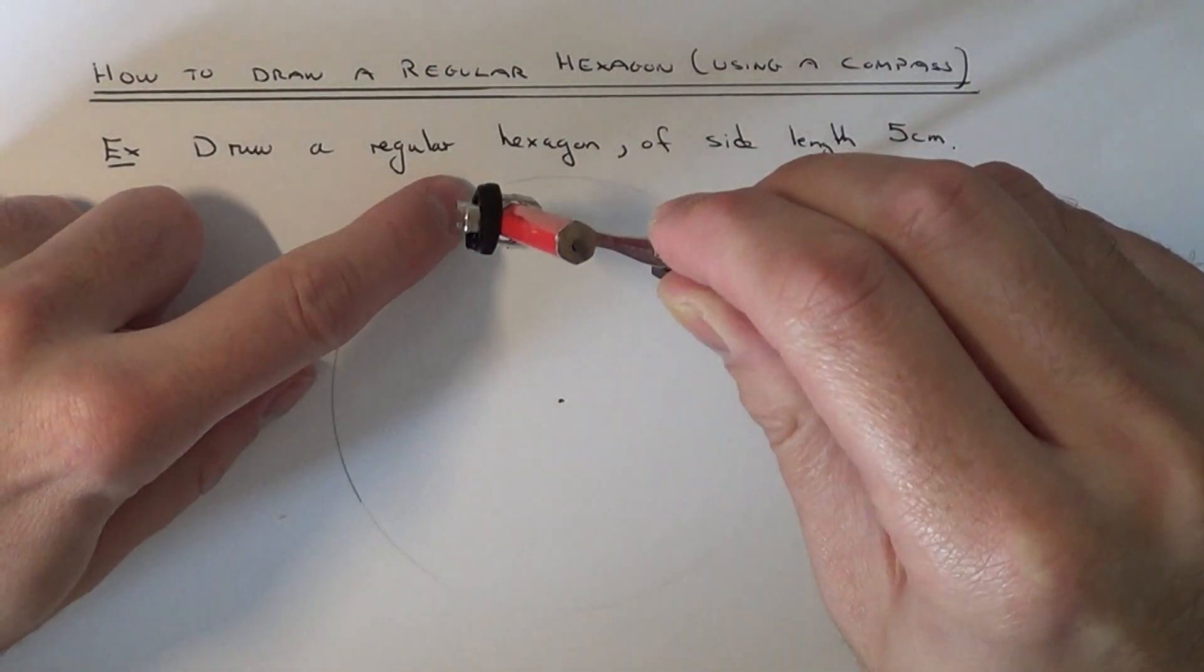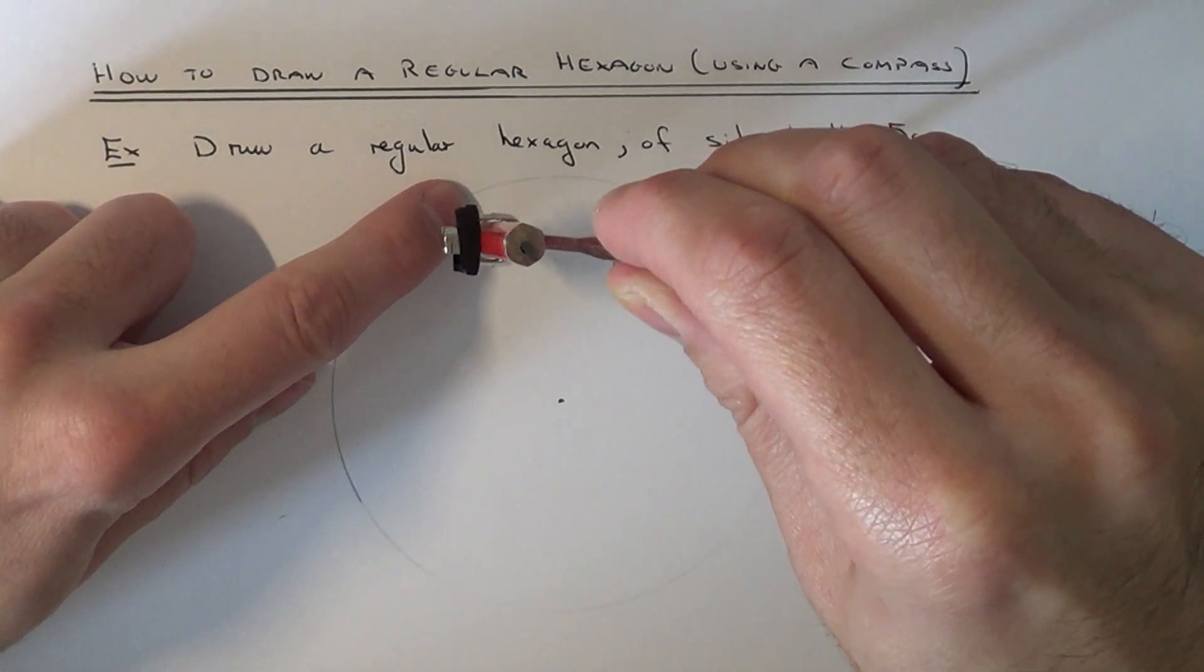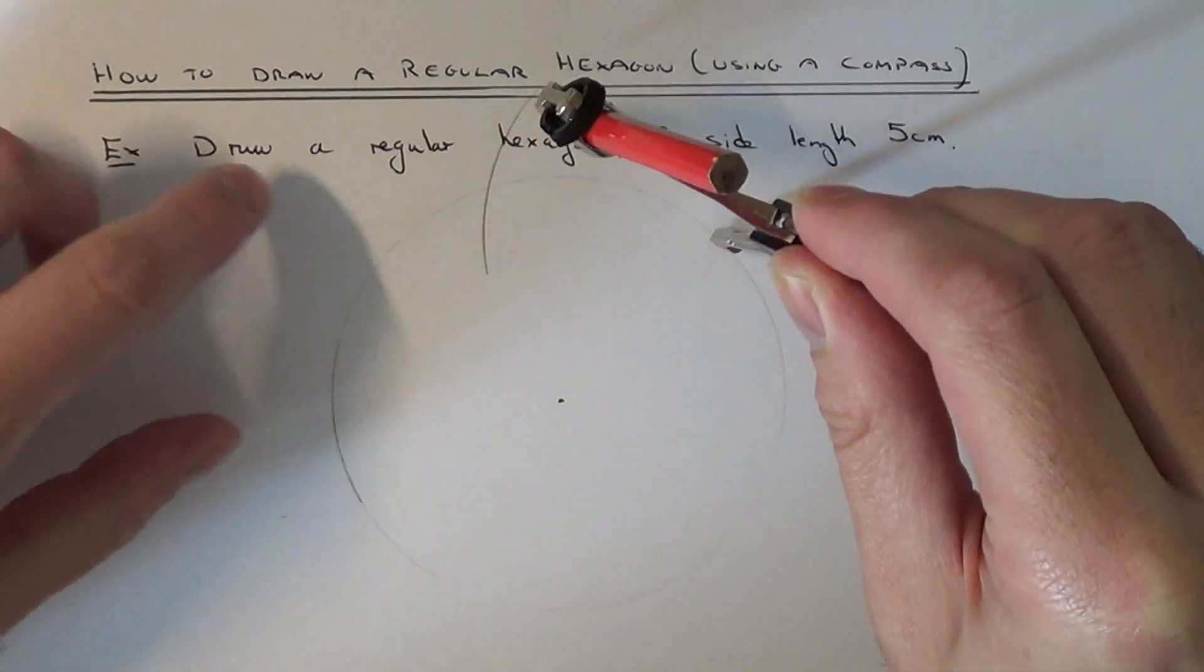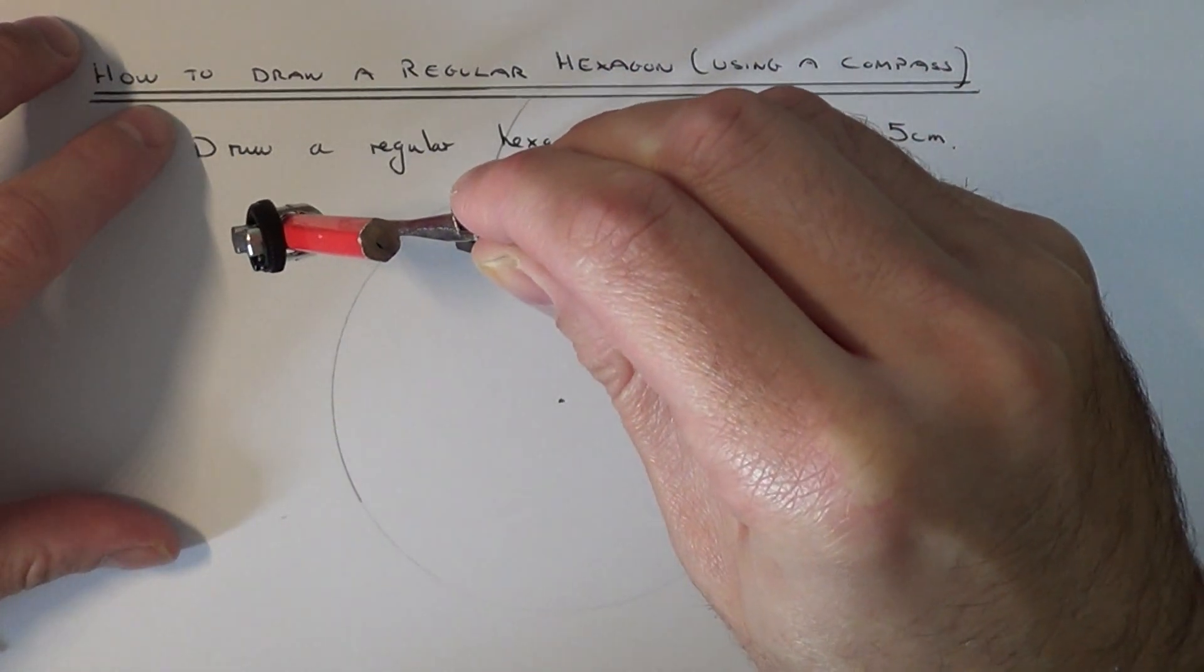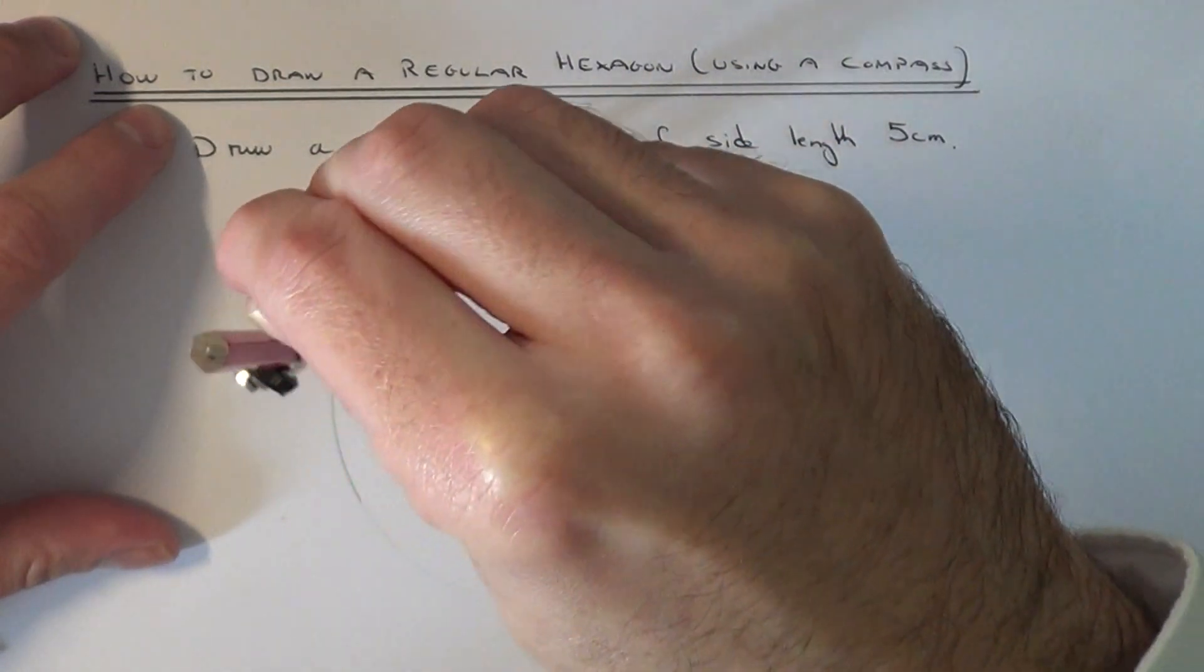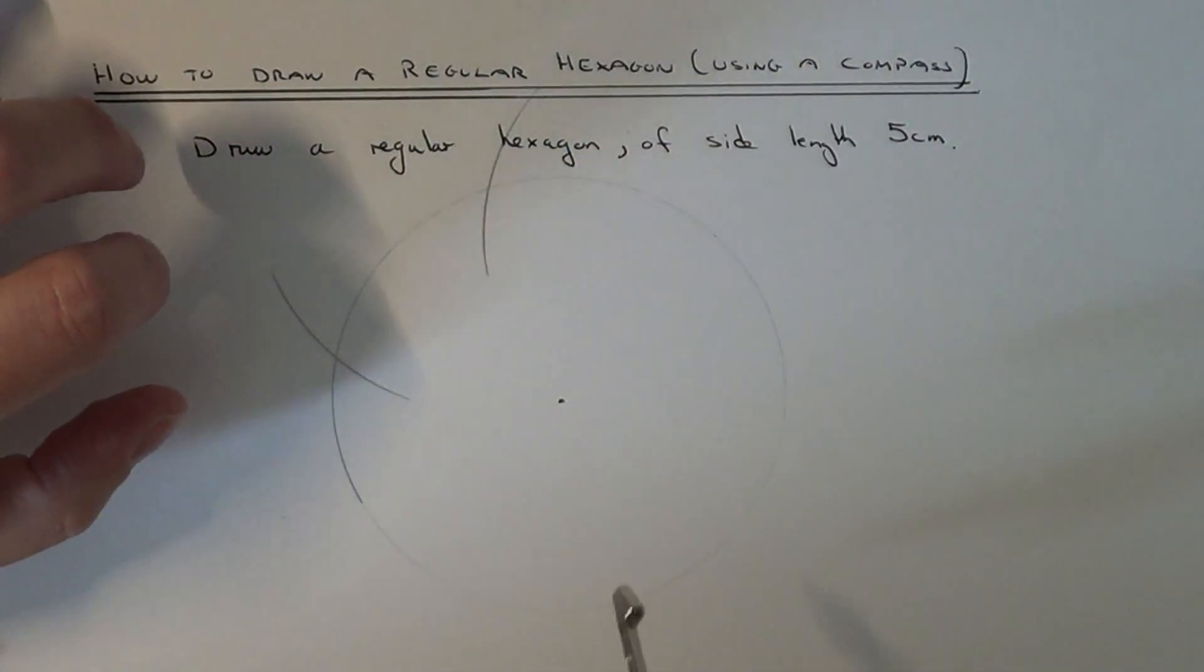All we need to do now is do some arcs going around the outside of the circle. There's our first arc. And again we move it to that next point there and do another arc. Keep going around the circle.